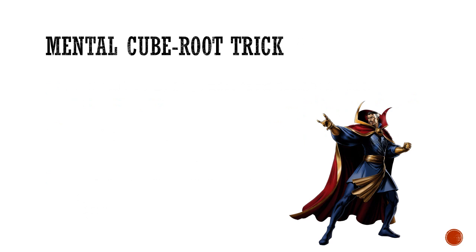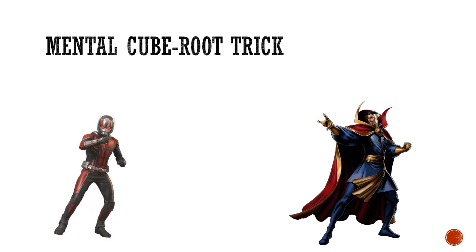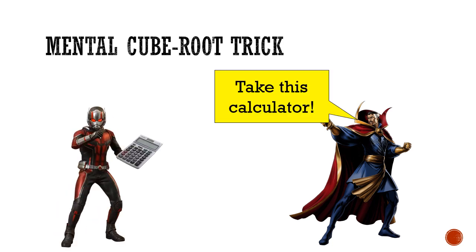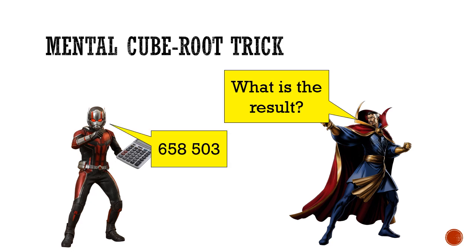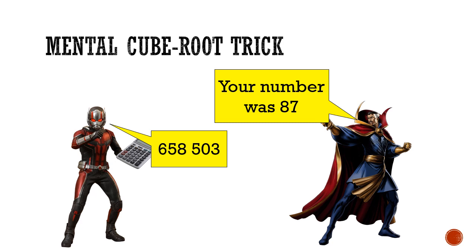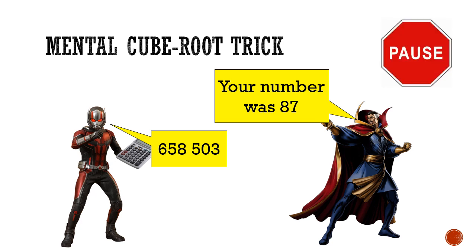Now we've reached our bonus material on how to magically cube root a 6-digit number in your head. Here's how the trick works: give a friend a calculator and ask them to key in a 2-digit number and cube it. Once they read out the number — say 658,503 — the magician mentally gets the cube root as 87. Pause the video and try to reverse engineer the steps.